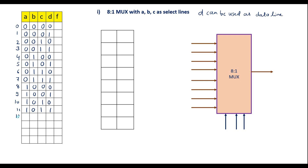Continuing the truth table: minterm 12 is 1100, 13 is 1101, 14 is 1110, and finally 15 is 1111. These are all possible values with four variables.